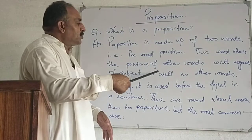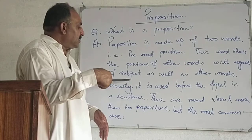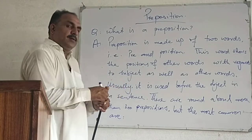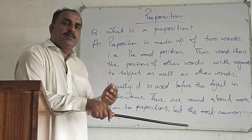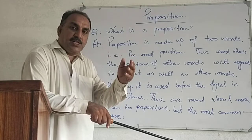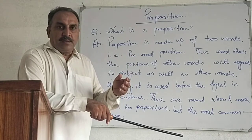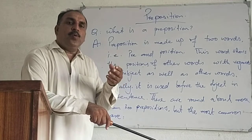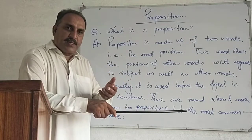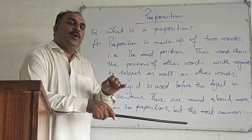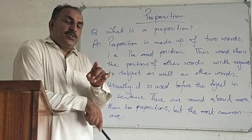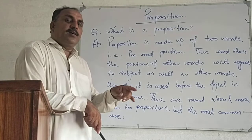This word shows the position of other words with regard to the subject, as well as the relationship of other words with each other. It is usually used before the object in a sentence. You will find a prepositional phrase at the end of the sentence, showing the position of the object with regard to the subject.